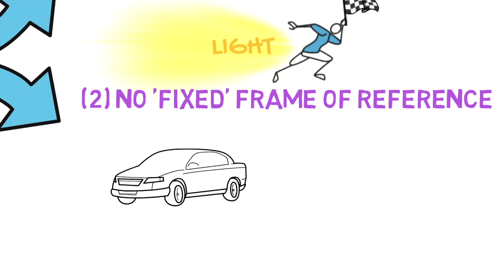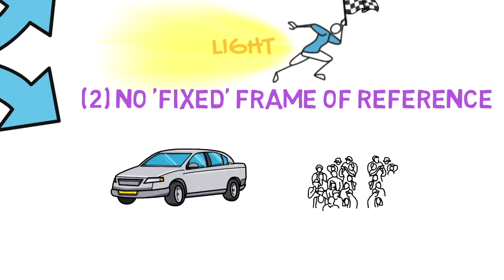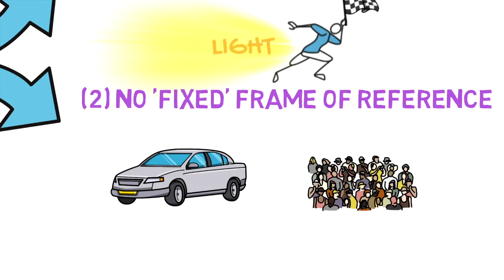For example, looking out the car window, to the person sitting in the car, it looks like the people outside are moving. But to the people outside the car, the person inside looks like they are moving. In Einstein's theory, both are equally true.